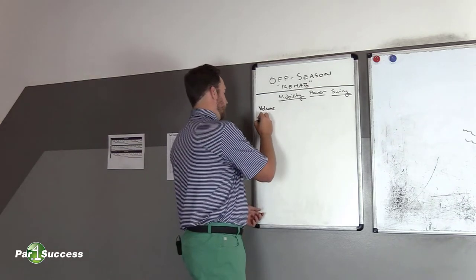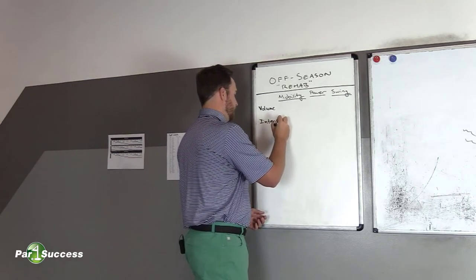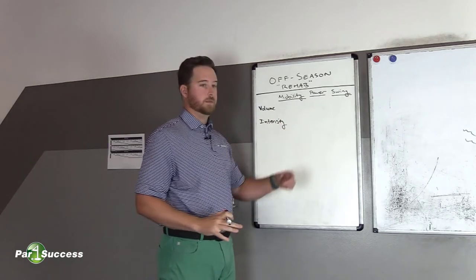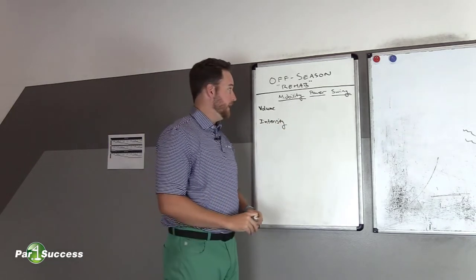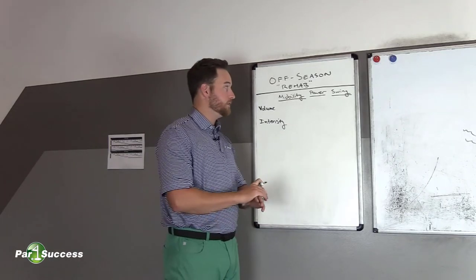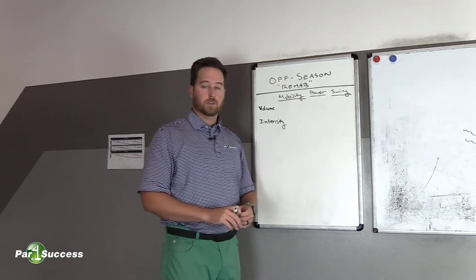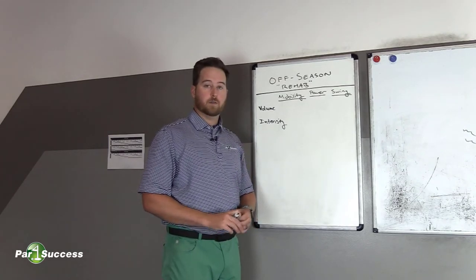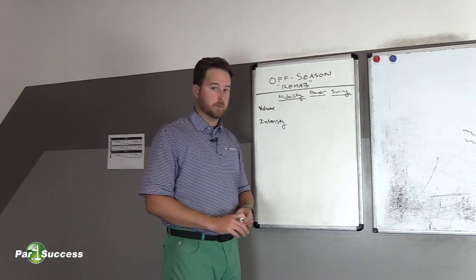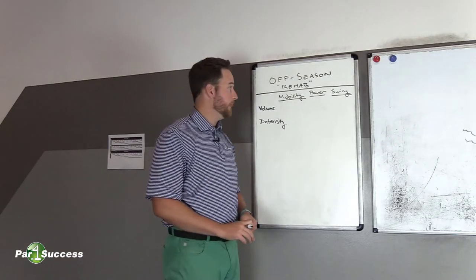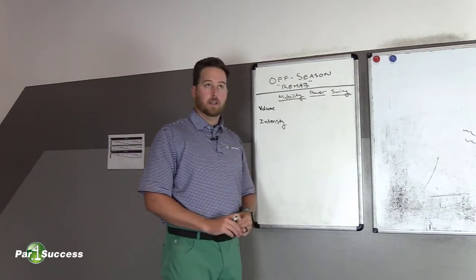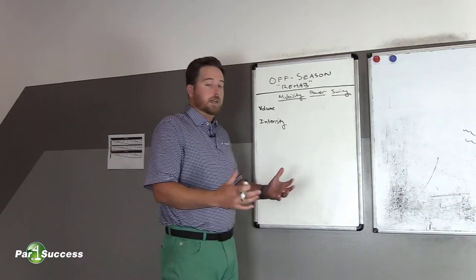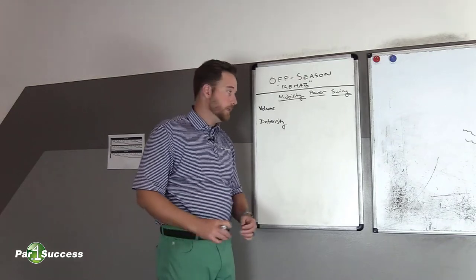Now the second part that we need to look at is intensity. For some of y'all that are in the gym this makes a lot of sense. If I'm doing a squat and let's say the best squat in my life was 225 pounds. Well, if I do 225 pounds, that would be a hundred percent intensity. That'd be the most intensity I can go through. If I only squatted a hundred pounds, that would be less than 50 percent intensity. So it might not really be enough to move the needle.